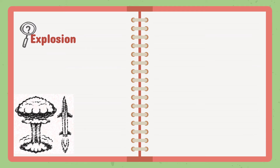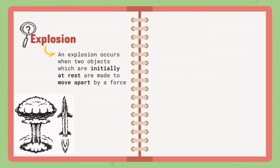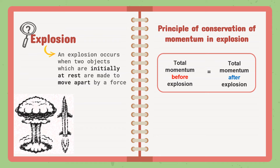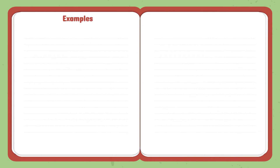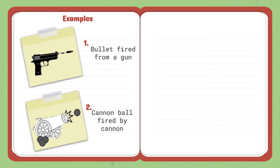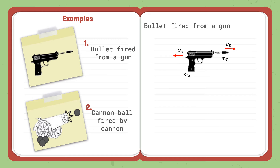Now we will move on with explosion. An explosion occurs when two objects, which are initially at rest, are made to move apart by a force. The principle of conservation of momentum in explosion states that the total momentum before explosion equals the total momentum after the explosion. Note that the total momentum before explosion is zero. Examples include a bullet fired from a gun and a cannon bomb fired by a cannon.